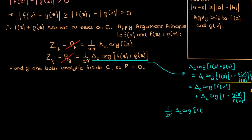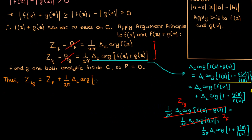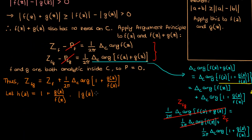If we multiply that equation by 1 over 2π, the expression on the left is just Z_{f+g} and the first term on the right is just Z_f, according to the argument principle applied above. All that remains is dealing with the winding number of h(z) = 1 + g(z)/f(z). We already know that on the contour C, the modulus of g(z) is less than the modulus of f(z) from the original assumptions, which means the modulus of g(z)/f(z) is less than 1.